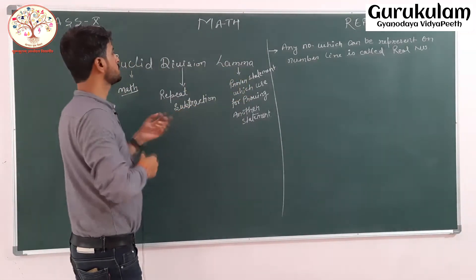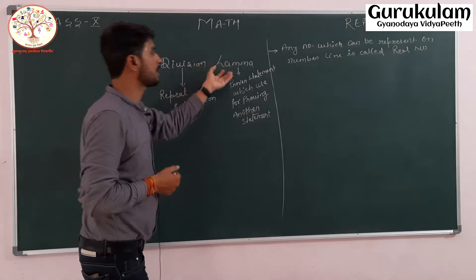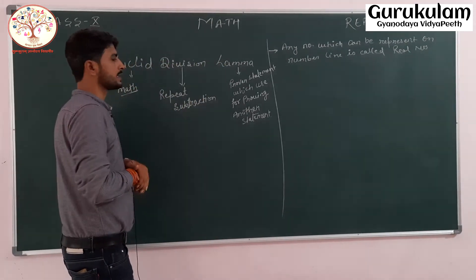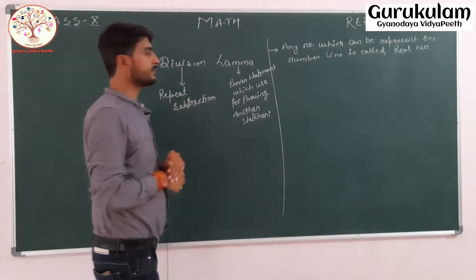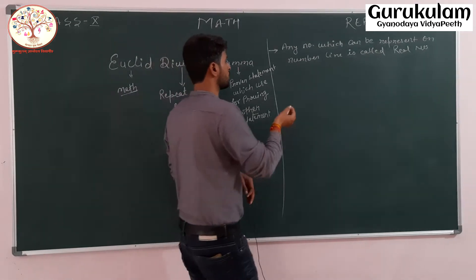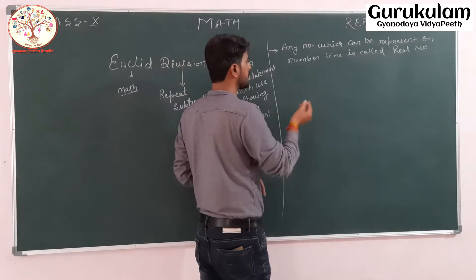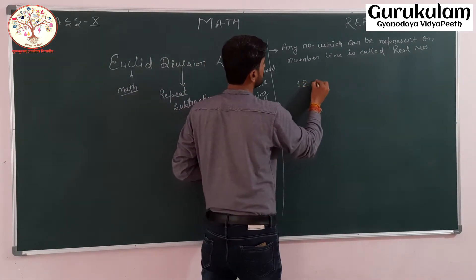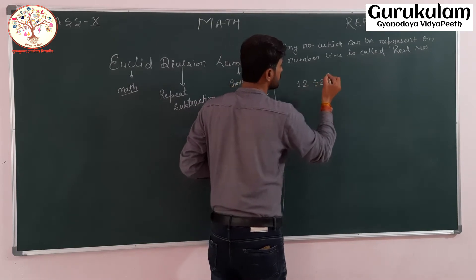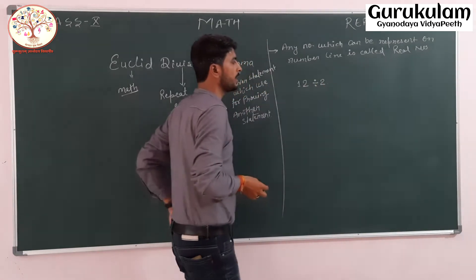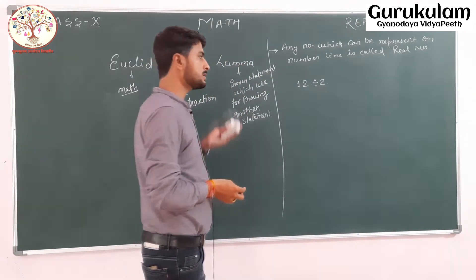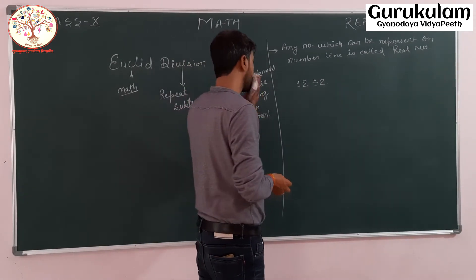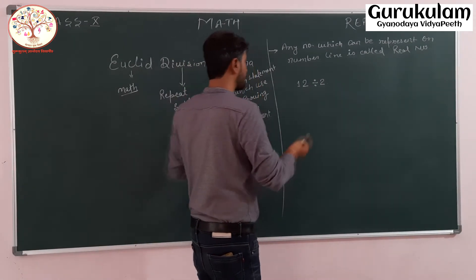In this chapter, we are going to learn about Euclid's Division Lemma. First, we will try to understand the concept of division. Let us take an example — if I am dividing 12 by 2, that means you have to divide 12 by the number 2.